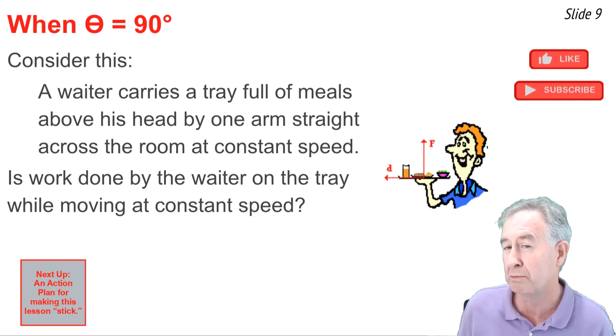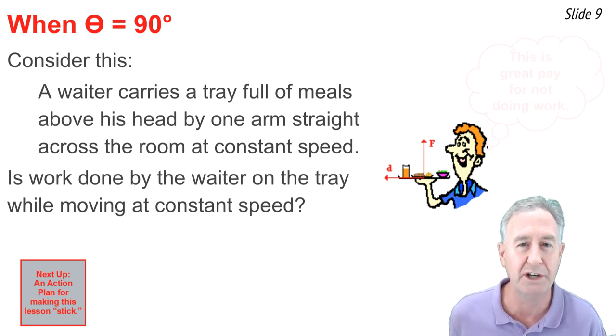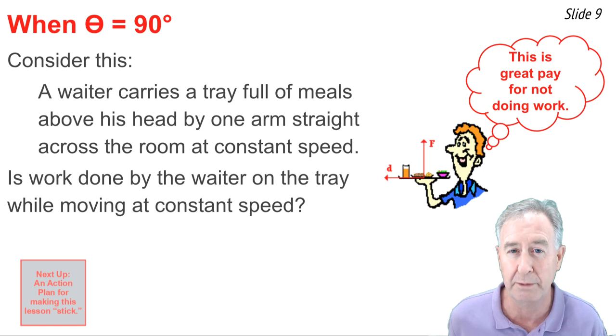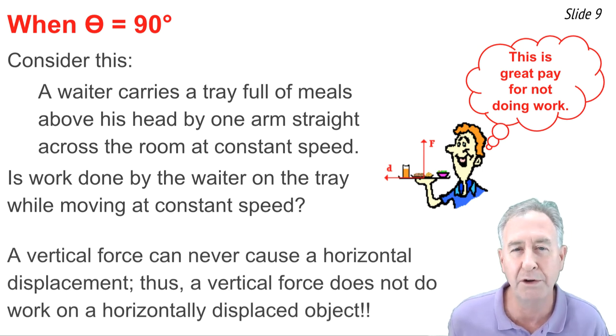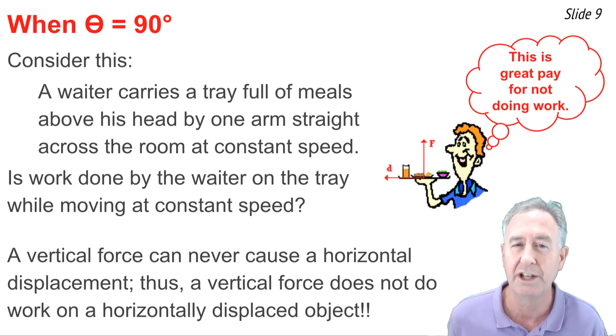The angle between the force and displacement vectors is 90 degrees, and the cosine of 90 degrees is zero, and so there is no work being done upon this tray full of meals. We can think of it like this: a vertical force could never cause a horizontal displacement, and as such, this vertical force does zero work upon the horizontally moving object.